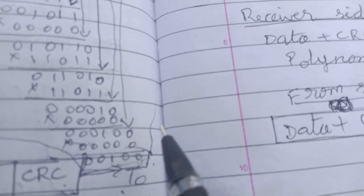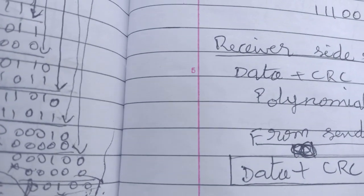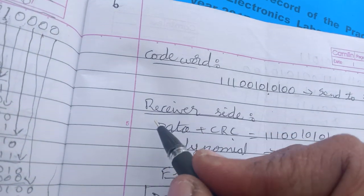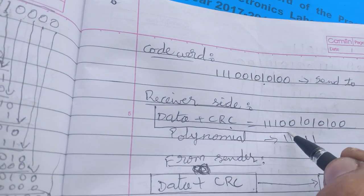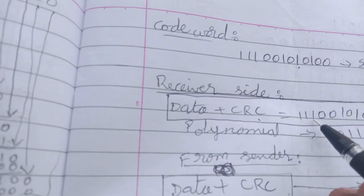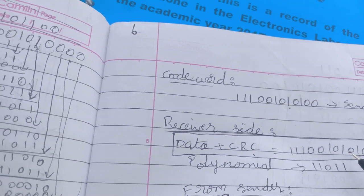Only three digits are there. To make it four digits, 0100 is added after your data. So from the transmitting section, the total data we are transmitting is 11001010100.